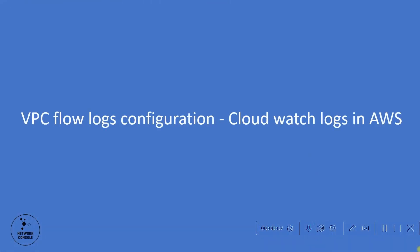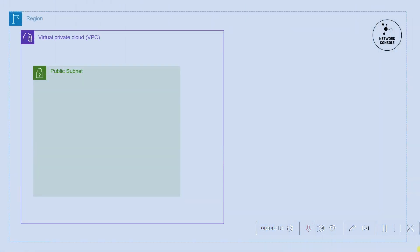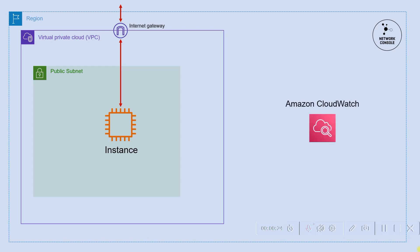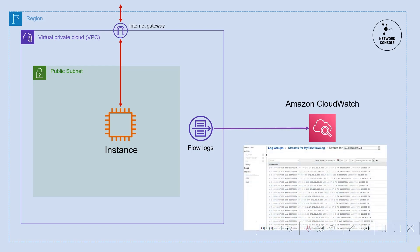Hello friends, welcome to this new lab. In this lab we are going to see how to enable VPC flow logs. In one region we'll configure one VPC and one public subnet, and in that public subnet we'll configure one instance. We can access this instance using an internet gateway from the internet. In Amazon CloudWatch we'll create a VPC log group and enable VPC flow logs, so whenever we access this instance from the internet it will generate logs and send them to Amazon CloudWatch.